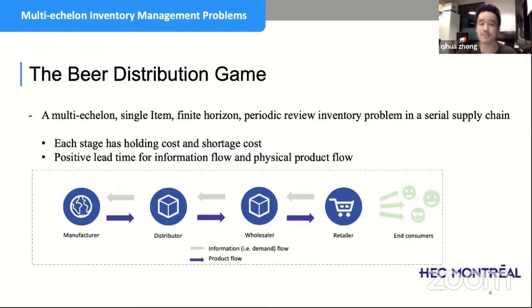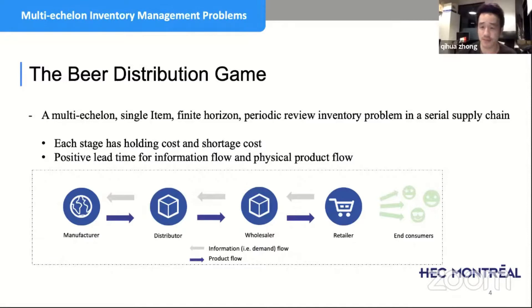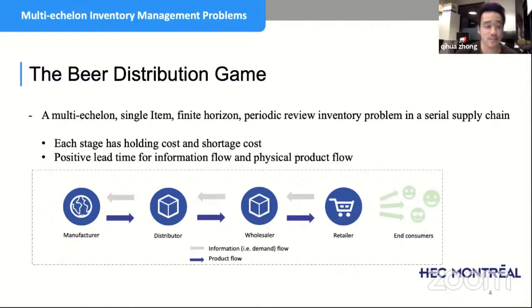We simplify the supply chain in the beer game with four parties: the retailer, wholesaler, distributor, and manufacturer. Each has to decide how many units of beer to order over time, minimizing inventory holding cost and backorder cost. Originally this game was introduced to show the importance of communication along the supply chain, but later it was shown to be a very interesting optimization problem.